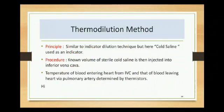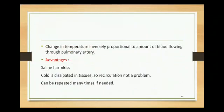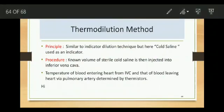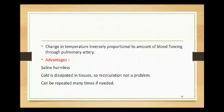The thermodilution method is similar to the indicator dilution technique but uses cold normal saline instead of Evans blue dye. A known volume of sterile cold saline is injected into the inferior vena cava, and the temperature of blood entering the heart from the IVC and leaving via the pulmonary artery is determined using thermistors. The change in temperature is inversely proportional to the amount of blood flowing through the pulmonary artery.